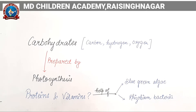So how will proteins and vitamins be formed? For carbohydrates, there is one process which is photosynthesis. What about proteins and vitamins? How are proteins and vitamins prepared in plants? They are mainly prepared with the help of two things that you are going to learn about in this chapter.